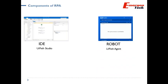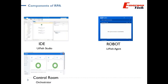Number two component is the Robot, called UiPath Agent. UiPath Agent is a component that creates the runtime environment for the bots to run. Essentially it's like an operating system for the bots — it creates the environment where bots execute and run in the production environment. On this robot environment, we don't have the IDE installed.